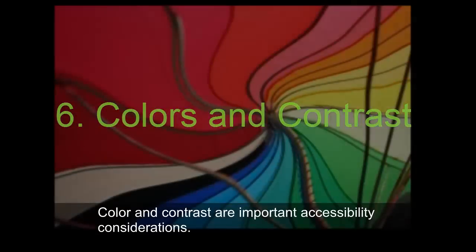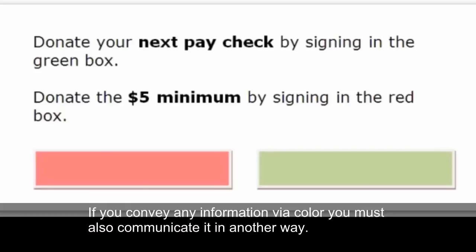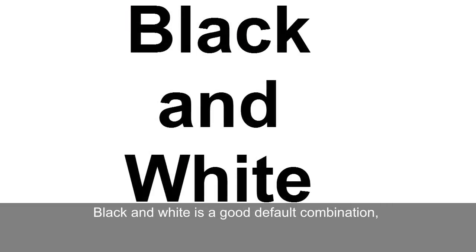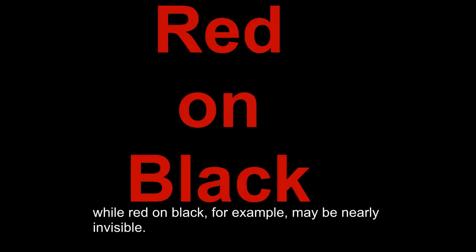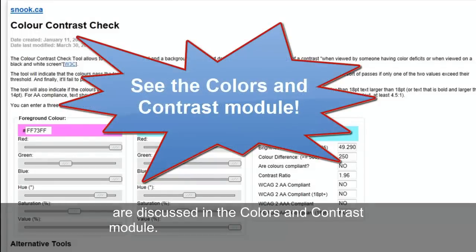Color and contrast are important accessibility considerations. If you convey any information via color, you must also communicate it in another way. Many people are colorblind and may not be able to distinguish a color you use in a document. Good contrast is essential for many readers. Black and white is a good default combination, while red on black, for example, may be nearly invisible. Some useful websites and tools that determine acceptable color contrast combinations are discussed in the Colors and Contrast module.